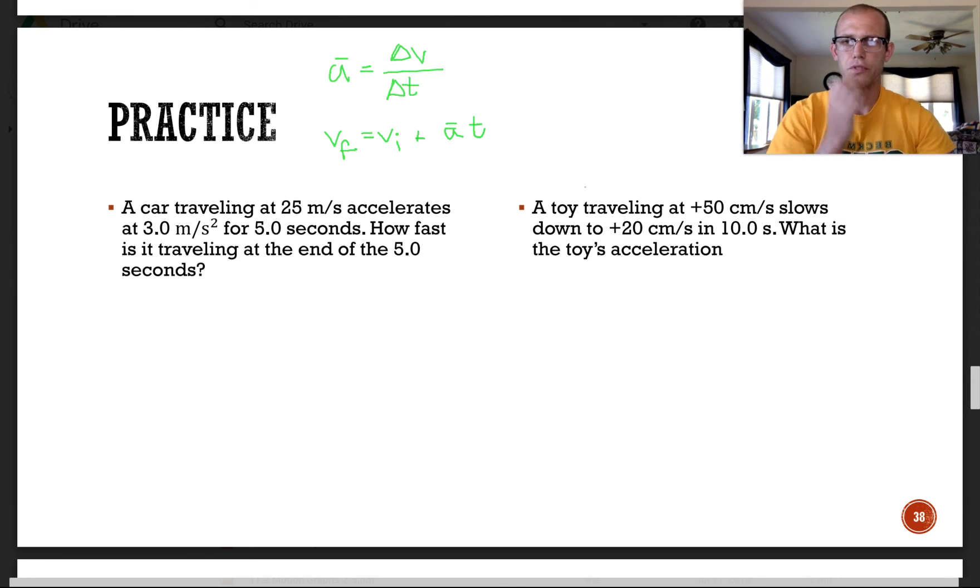All right, a few examples with this type of formula. So a car is traveling at 25 meters per second, accelerates at 3.0 meters per second squared for 5 seconds. How fast is it traveling at the end of the 5 seconds? So if we were looking for our final velocity, this is the quicker equation to use, although you could use this one. So we're going to use vf. So vf equals, what do I know? So I know the initial velocity is 25 meters per second. I know that it is accelerating at 3 meters per second squared for a time of 5 seconds.